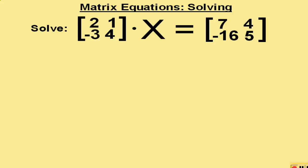Matrix equations solving. Solve the following matrix equation: the 2 by 2 matrix [2, 1, -3, 4] times an unknown matrix X equals [7, 4, -16, 5].